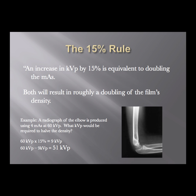If you go up 15% in KVP to double your density, your contrast is going to be lower because at higher KVPs contrast is reduced. Think of it like a seesaw — on both sides you have KVP and mAs, and you need to find the right combination to give you optimal film quality. If you make any change in KVP to change the contrast level of the film, you'd have to compensate by going down in mAs, and vice versa.